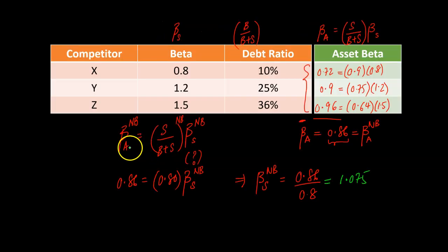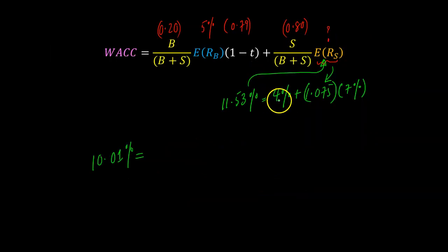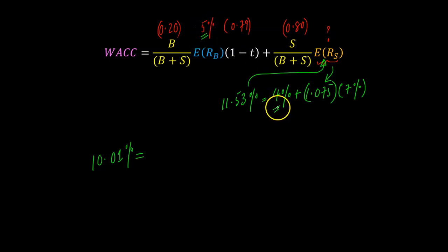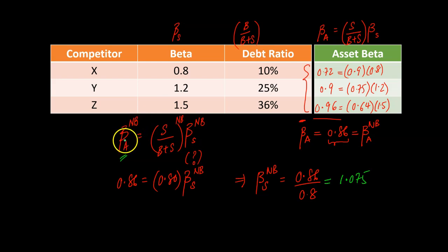One quick caveat: the formula relating asset beta and equity beta assumes that debt is risk-free, meaning the cost of debt equals the risk-free rate. That is not the case here — the risk-free rate is 4% and the cost of debt is 5%, so debt does carry some risk. The difference is small, so it's close to risk-free, but in situations where the cost of debt and risk-free rate differ significantly, you technically cannot use this formula exactly. A modification exists to handle risky debt, but that is covered in a separate video.